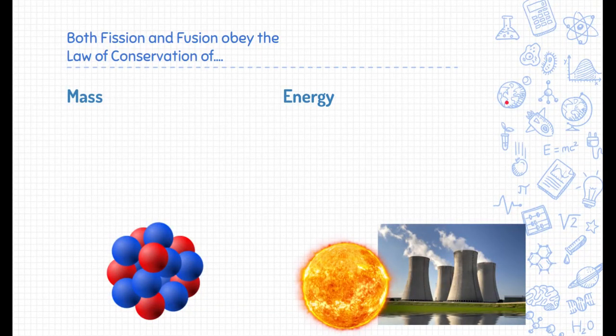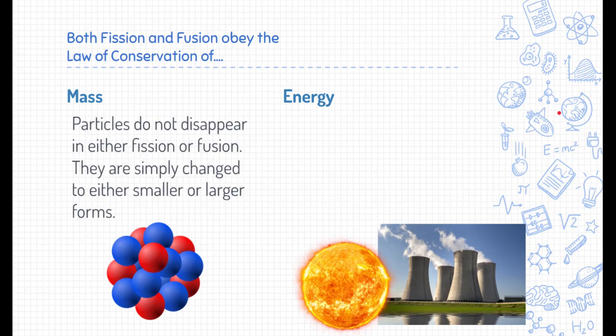The last thing I want to talk about is that both fission and fusion obey really important laws of chemistry, the law of conservation of mass and the law of conservation of energy. What happens is in both fission and fusion, the particles don't disappear. It might seem like that when they release tons of energy, like think of atomic bombs. It seems like all these particles are just phasing out, but they're not. Either fission or fusion, particles are either changed into smaller or larger forms, but the mass is conserved. The mass has always been there and it always will be there.